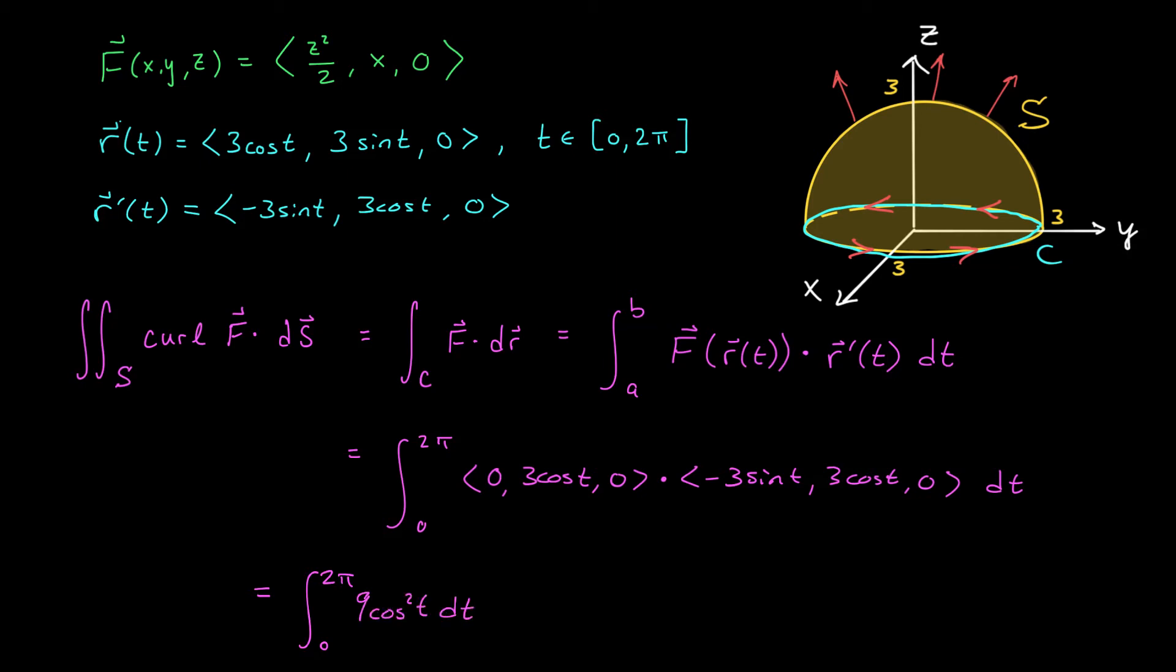From here, I'm going to use a trig identity to make my integrand a little friendlier. I'll factor out the 9. I have the integral from 0 to 2π, and I'm going to replace cos²(t) with (1 + cos(2t))/2. At this point, I'll take the 2 out and find an antiderivative. This gives me 9/2. My antiderivative is t + sin(2t)/2, and I evaluate from 0 to 2π. It's not too hard to see that this sine term is going to disappear under both bounds, leaving me with a final answer of 9π.